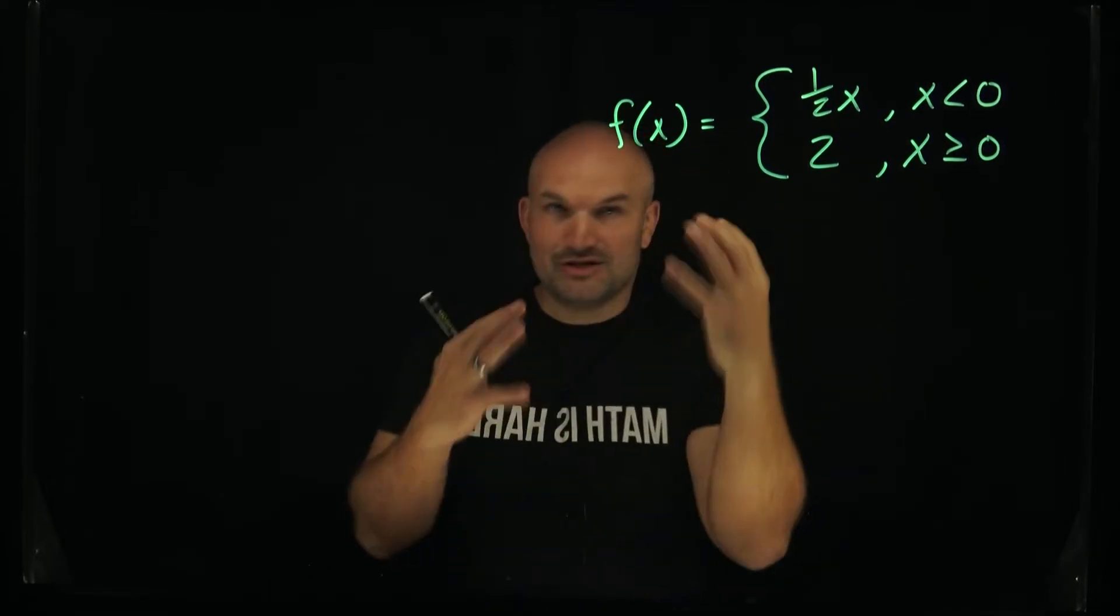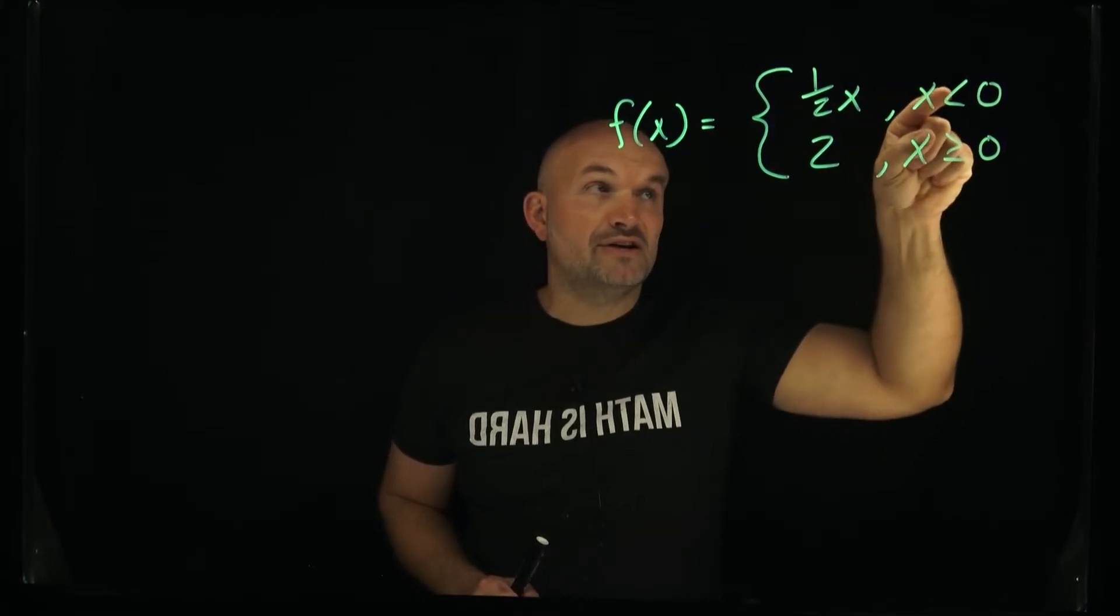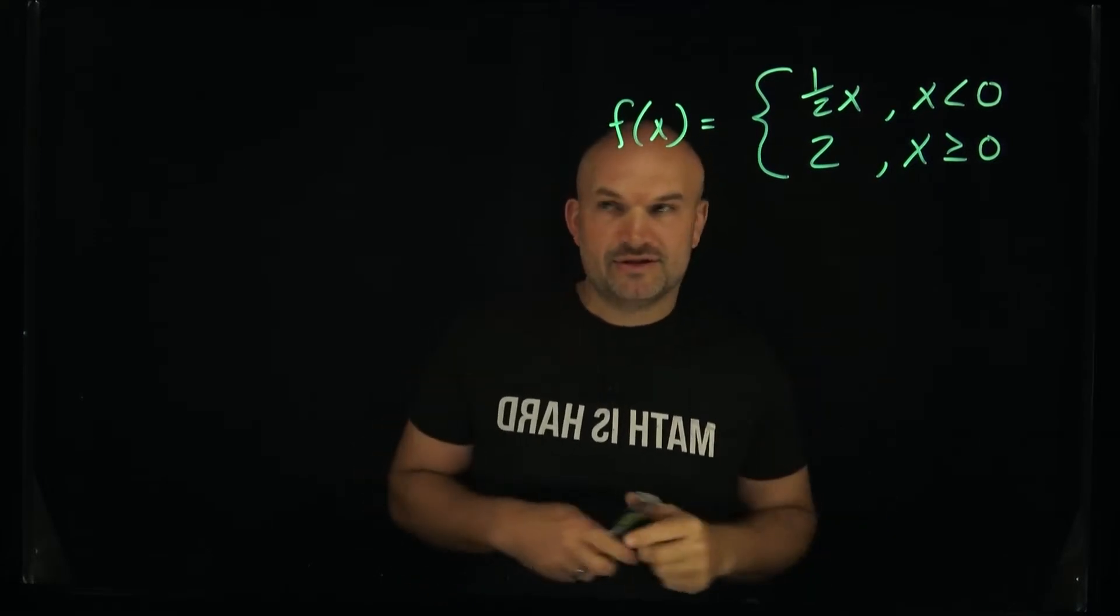So you have this function f(x) and you have two rules. You have 1/2x which is only true for x values that are less than 0, and you have the rule 2 which is only true for x values that are greater than or equal to 0.